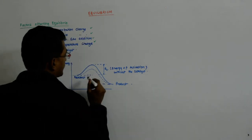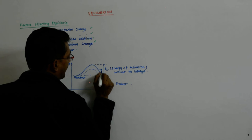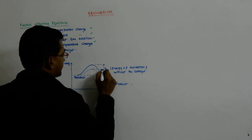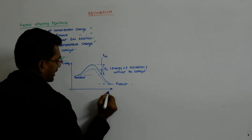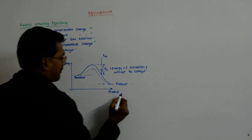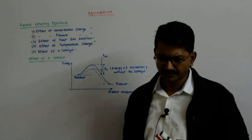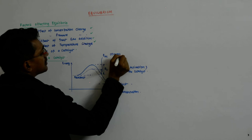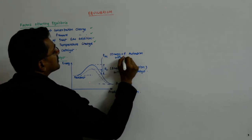So this is the energy of activation with the catalyst. This is EAC. This is just the formation of reactant, the product. This is the product concentration. This EAC is the energy of activation with the catalyst.